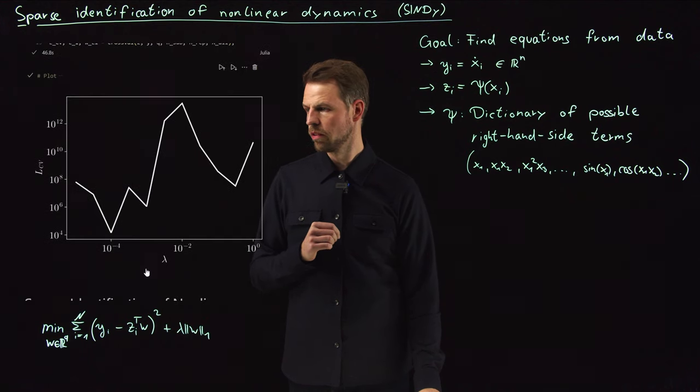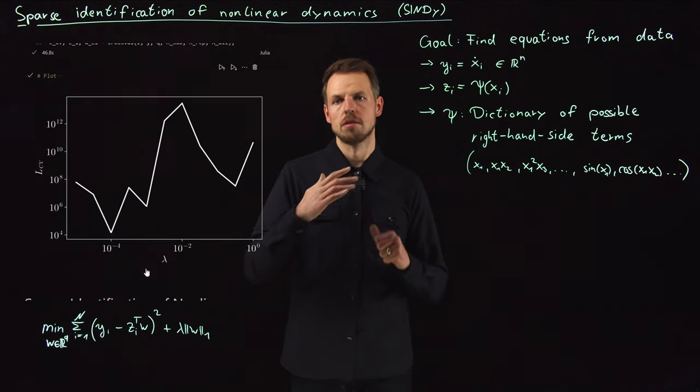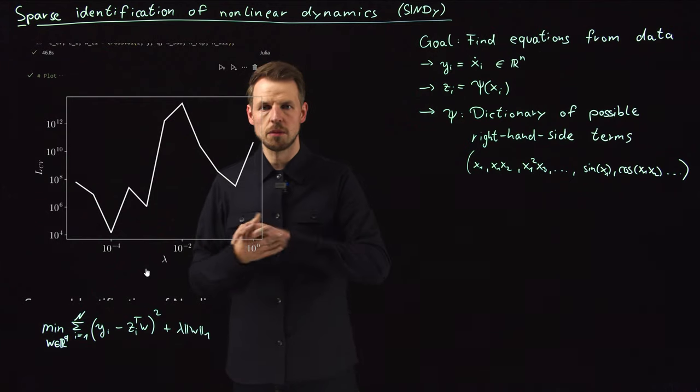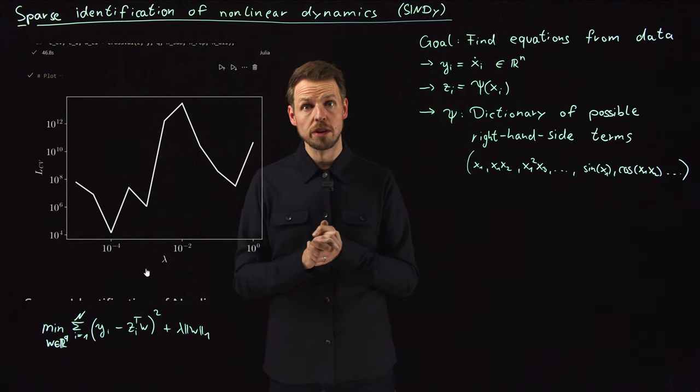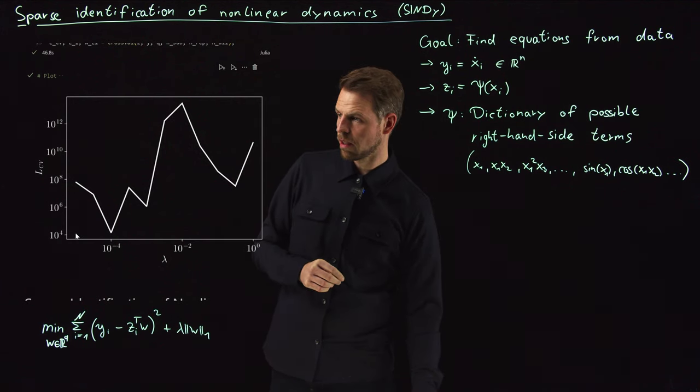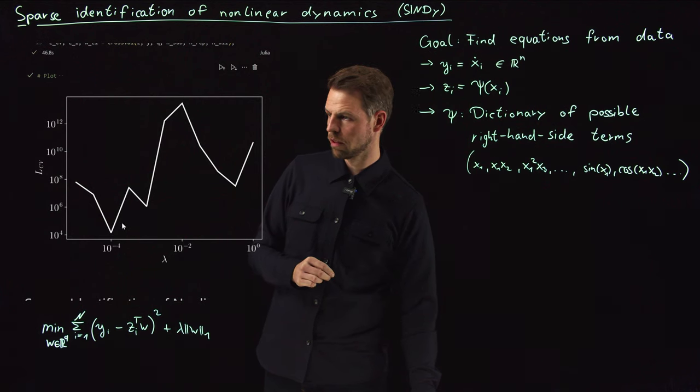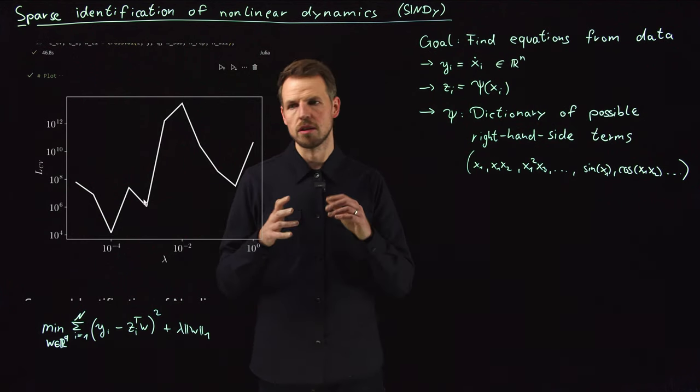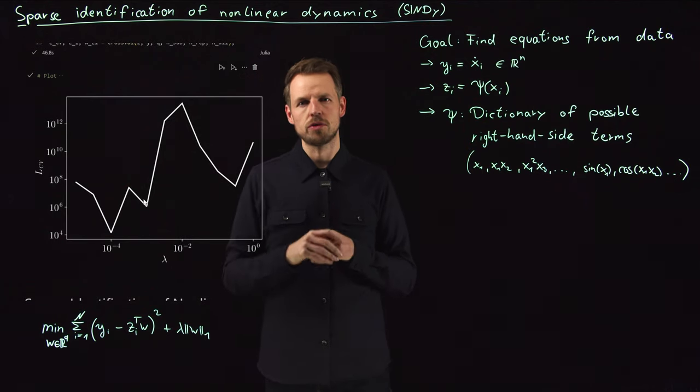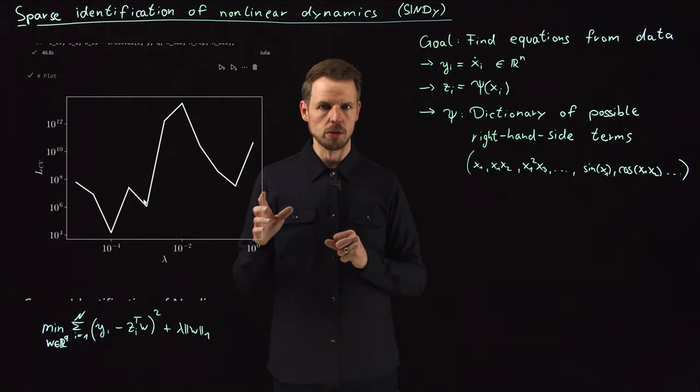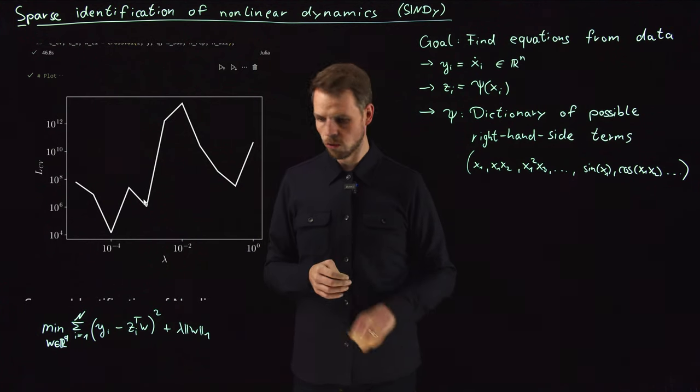If you do this, you get this sort of, well, a bit randomly looking curve. But you see that it somewhat confirms what we have seen before, that somewhere in the middle there seems to be a sweet spot between 10 to the minus 4 and 10 to the minus 3 somewhere. So this is, in the cross-validation, a sweet spot for how to select the lambda value. So model selection using cross-validation.